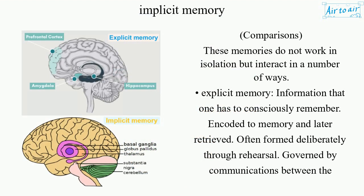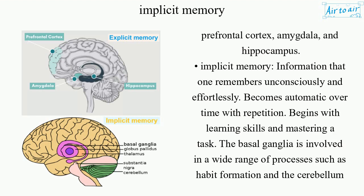Comparisons: these memories do not work in isolation but interact in a number of ways. Explicit memory is information that one has to consciously remember — encoded to memory and later retrieved, often formed deliberately through rehearsal. It is governed by communications between the prefrontal cortex, amygdala, and hippocampus.